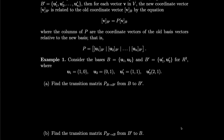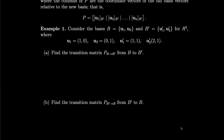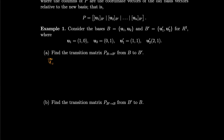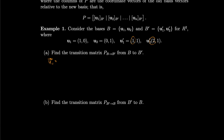As an example, consider the basis B equals U1, U2 and B prime equals U1 prime, U2 prime for R2, where U1, U2, U1 prime, and U2 prime are given. Let's find the transition matrix P that goes from B to B prime. We'll write U1 in terms of U1 prime and U2 prime. U1 is 1, 0. If we take U1 prime and subtract it from U2 prime, we get 2 minus 1 equals 1 and 1 minus 1 equals 0.